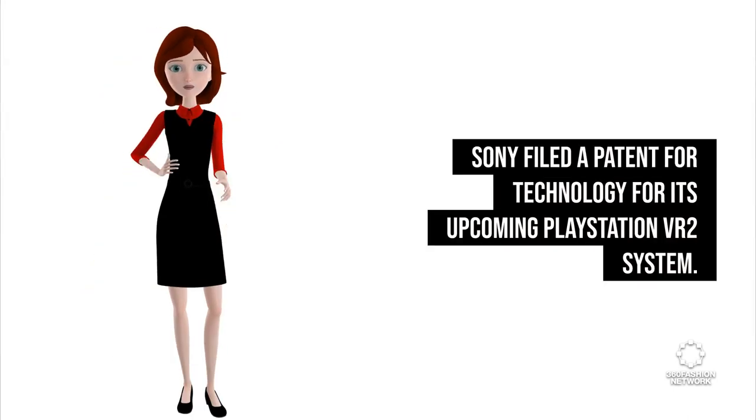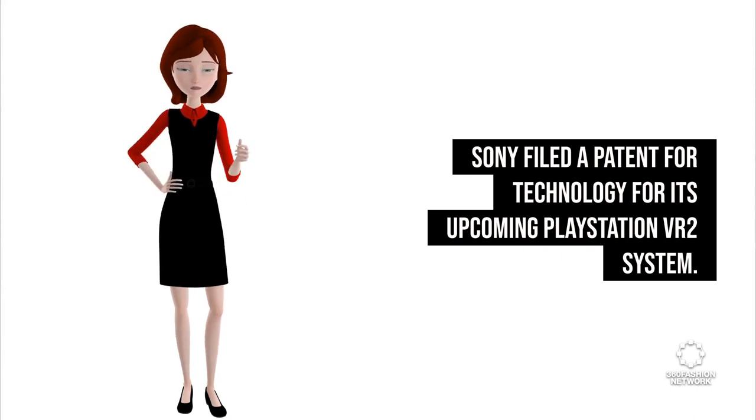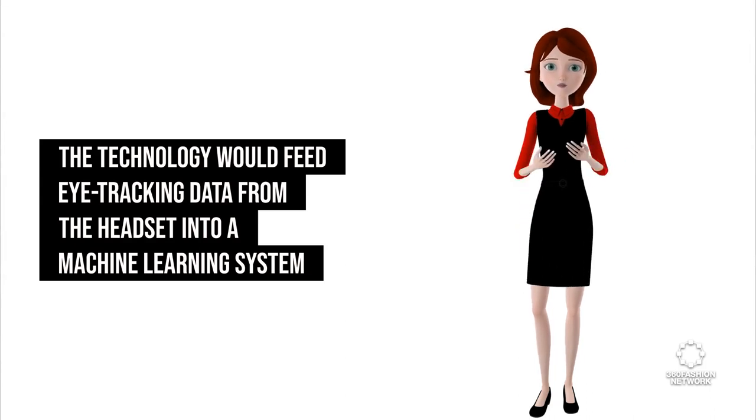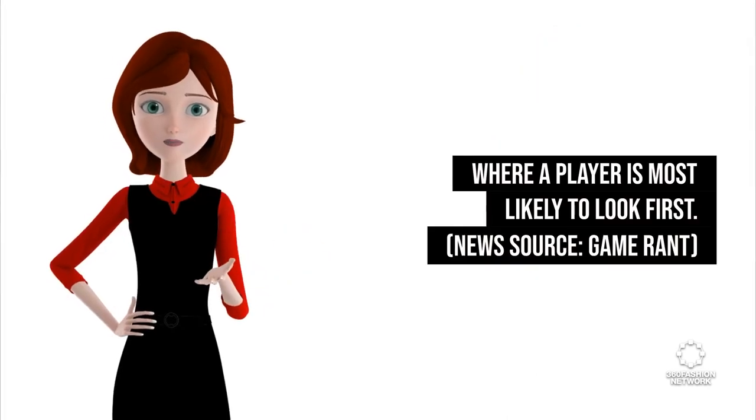First up, Sony filed a patent for technology for its upcoming PlayStation VR 2 system. The technology would feed eye-tracking data from the headset into a machine learning system and assign more processing power to the part of a scene where a player is most likely to look first.